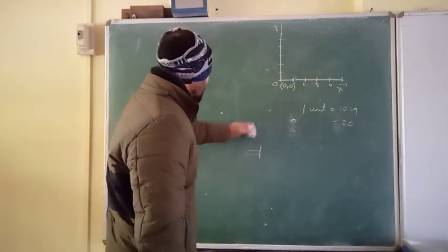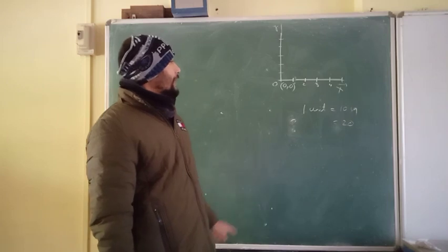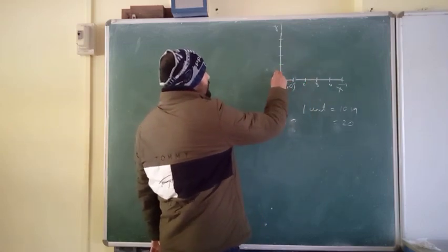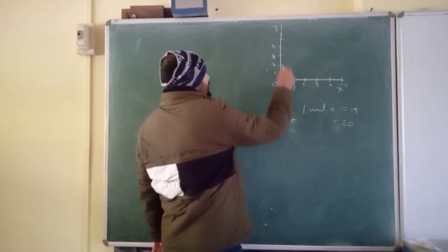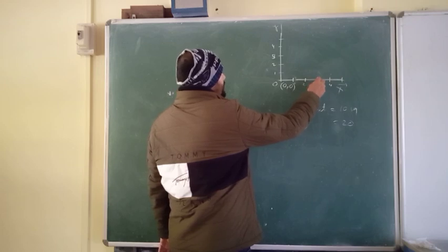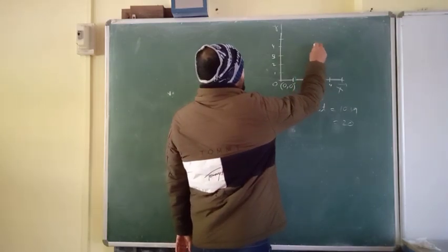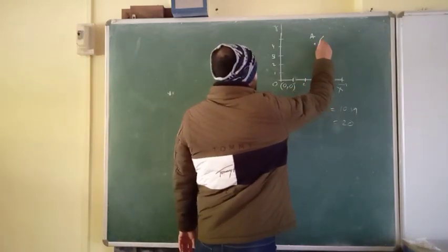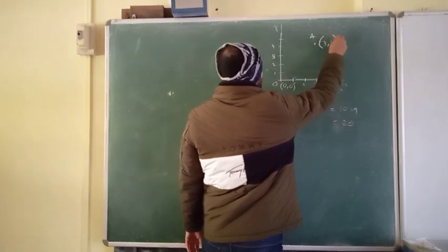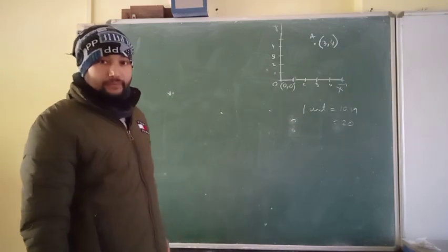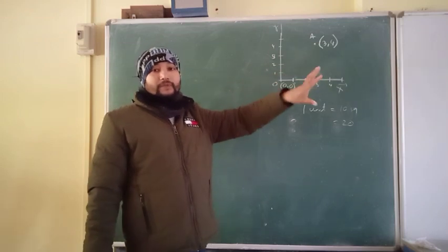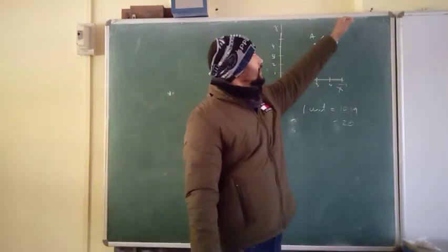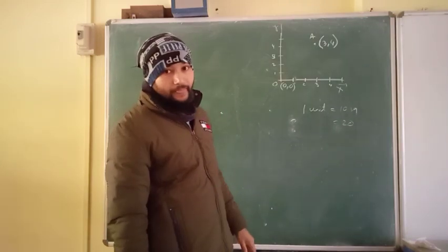If I ask you to plot a point — suppose along the x-axis I move 3, and along the y-axis I move 4 — so this is 1, 2, 3 along x, and 1, 2, 3, 4 along y. This particular point I name A, written as x-axis 3 and y-axis 4. Similarly, you can plot another point — suppose I give (5, 6): go 5 along x and 6 along y to find that point.